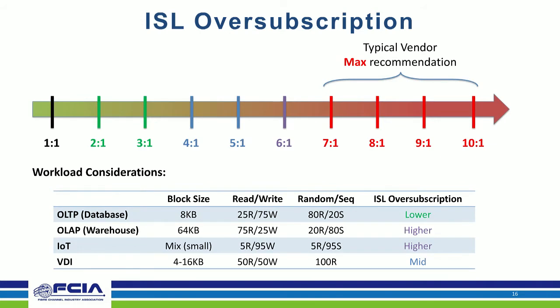Looking at a continuum of ISL over-subscription levels, typical vendor documentation calls out seven-to-one to ten-to-one as the maximum recommendation. There's some variability between vendors. If you ask a professional whether seven-to-one is good, many will say it depends, and that it might sound a little too high.